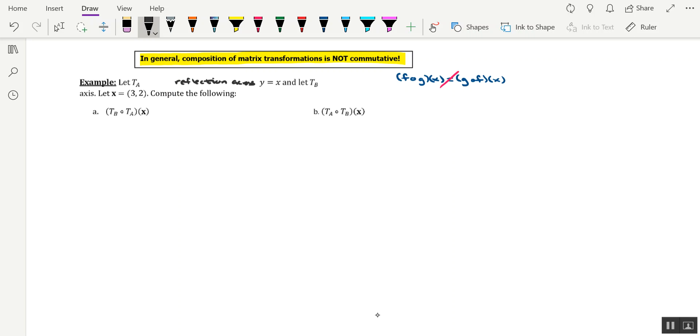And then it says, let t sub b be the orthogonal projection onto the x-axis. So sorry about the hack job here with the instructions, but hopefully I've included enough to where you get the point as to what these transformations are supposed to do.